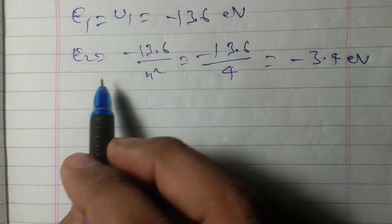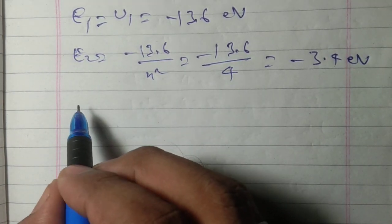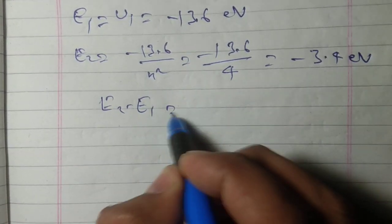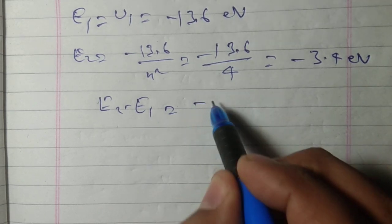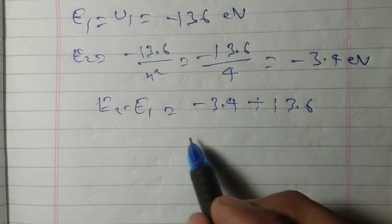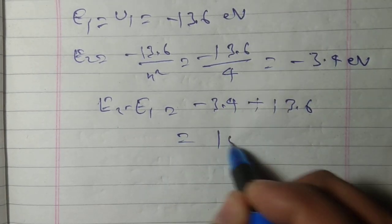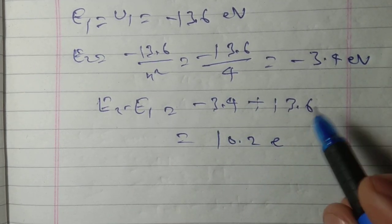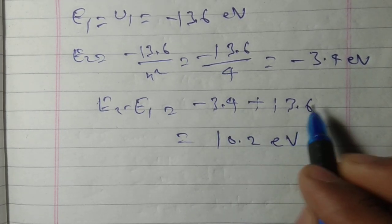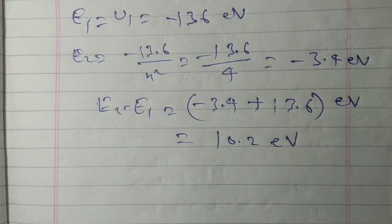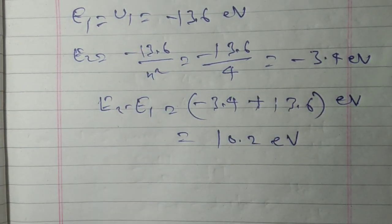volt. So the required energy from ground state to first excited state equals E2 minus E1 = minus 3.4 plus 13.6, which equals 10.2 electron volt. So this is in electron volt.